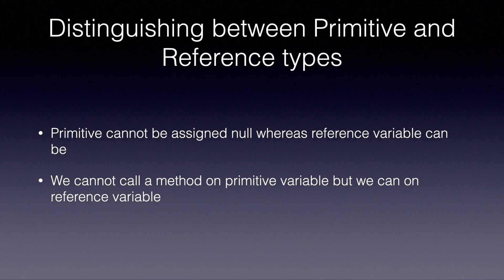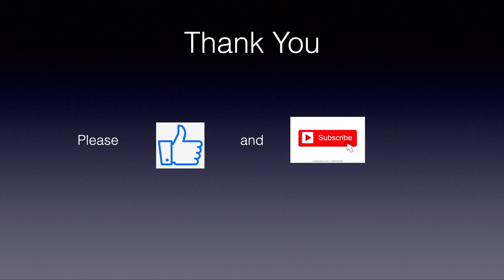Let's look at the two main differences between primitive and reference types. First, primitive types cannot be assigned a null value — we cannot say 'int i = null' — however reference types can be assigned null, meaning the variable isn't pointing anywhere. Second, we cannot call a method on a primitive variable, but we can call a method on a reference variable. This concludes the video — if you liked the content please hit the like button and subscribe for upcoming certification videos.